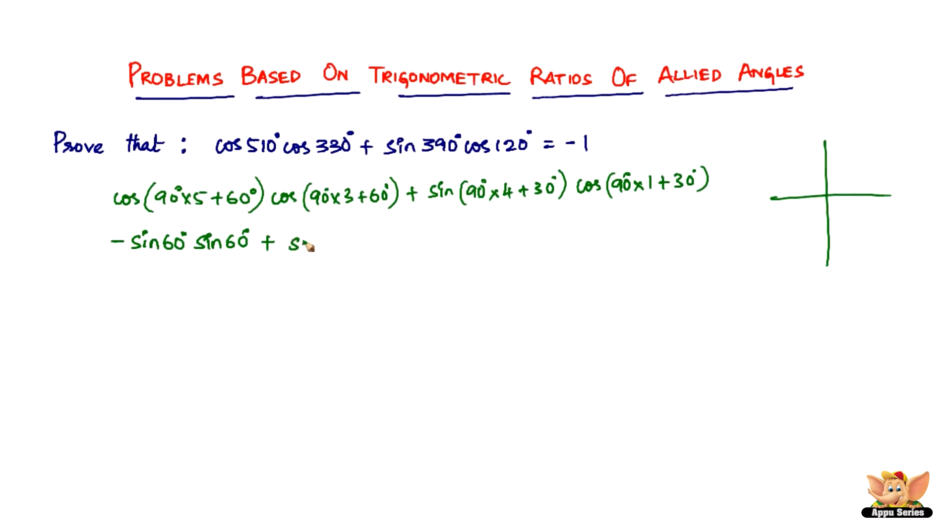120° lies in the second quadrant. In the second quadrant, sine is positive but cosine is negative, so it's going to be minus. Since the number is odd, cos is going to change to sin, so it's -sin 30°.